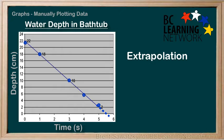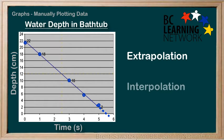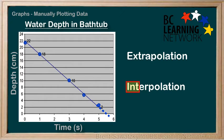What if we were curious about the depth of the water after 2.5 seconds? That's between our data points, but we can use the line showing our pattern to determine what the depth is at 2.5 — it looks about 12 centimeters. Using the pattern to make predictions between data points is called interpolation. Extrapolation starts with EXT, just like external, so it looks at predictions outside or external to the data range. Interpolation starts with INT, just like internal, so it looks at predictions inside or internal to the range of data.